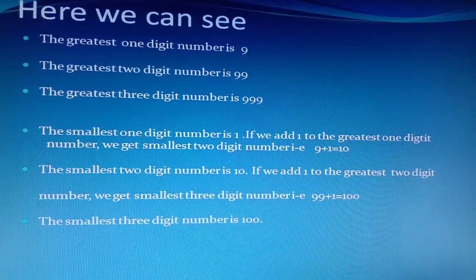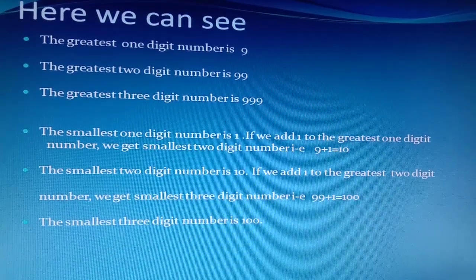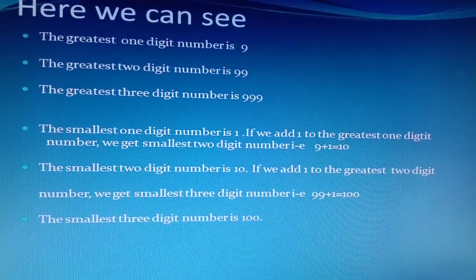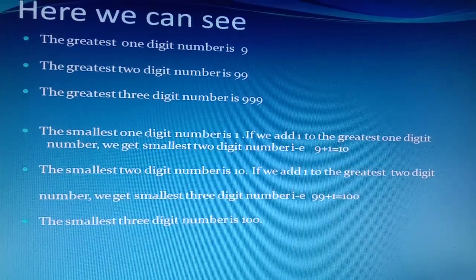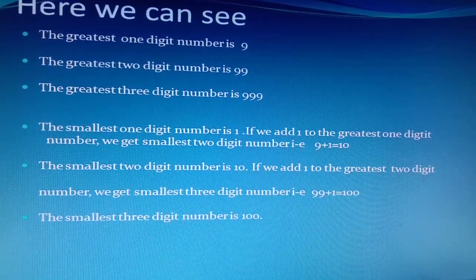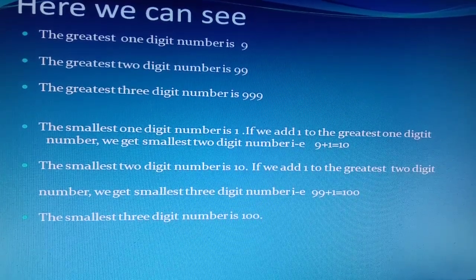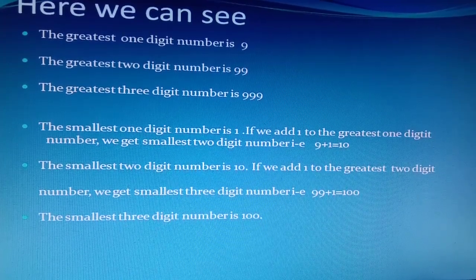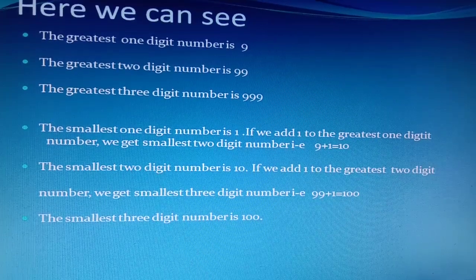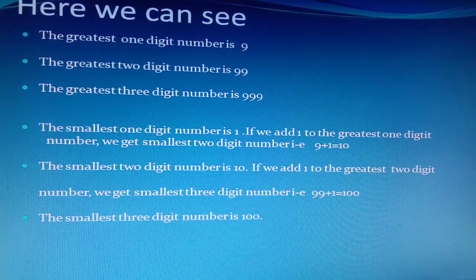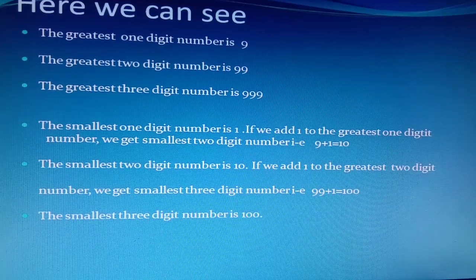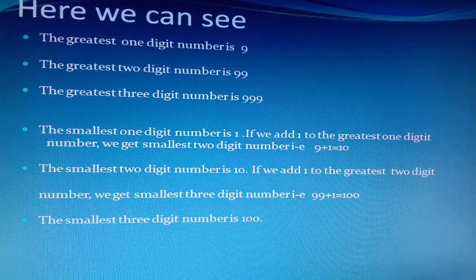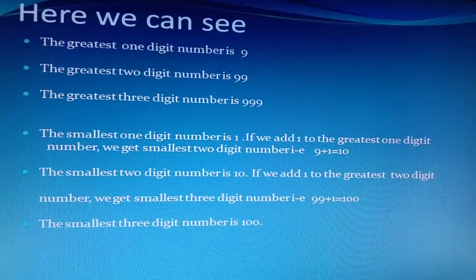The greatest one digit number is 9, the greatest two digit number is 99, and the greatest three digit number is 999. The smallest one digit number is 1. If we add 1 to the greatest one digit number, we get the smallest two digit number: 9 plus 1 equals 10. If we add 1 to the greatest two digit number, we get the smallest three digit number: 99 plus 1 equals 100.